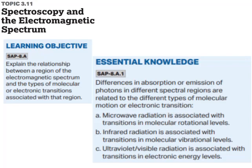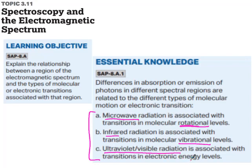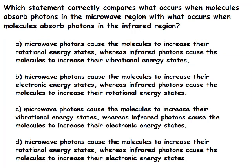In spectroscopy, you need to know the differences in absorption or emission of photons in different spectral regions. Microwave radiation is associated with rotational energy levels. Infrared is associated with vibrational energy levels because infrared has lower energy and can only cause vibrations. UV and visible radiation has more energy and can cause electronic energy transitions. Microwave = rotational, infrared = vibrational, UV/visible = electronic—so the answer is A.